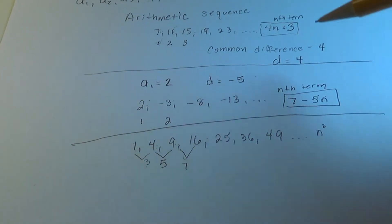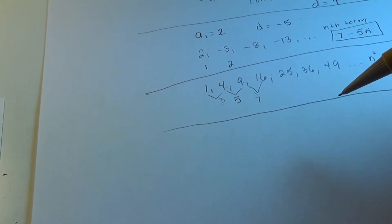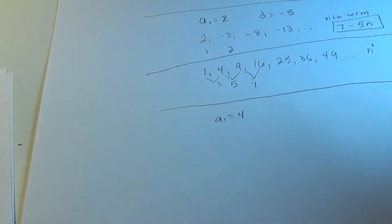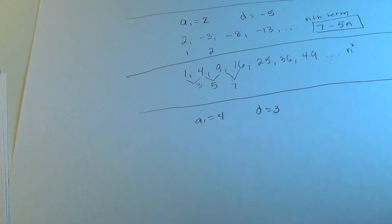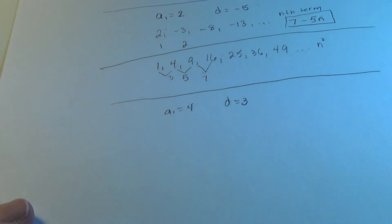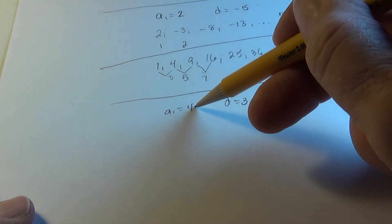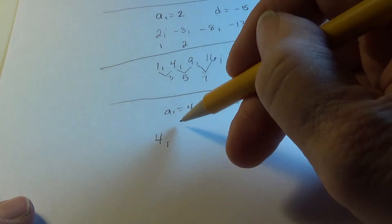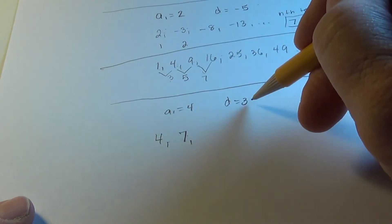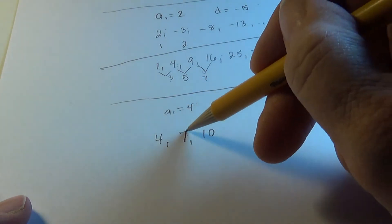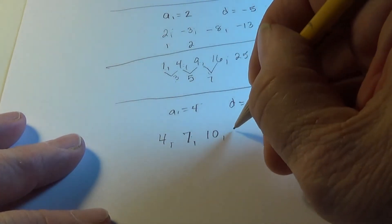Let me explain how to get these generating functions when the sequence is arithmetic. Say a sub 1 is 4 and the common difference is 3. Let's generate a few terms in a way that shows clearly what's happening. The first term is 4. The second term is 4 plus 3. The next is 7 plus 3, then 10 plus 3, and so on.